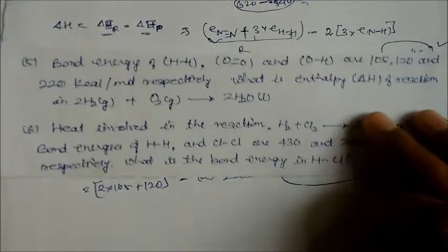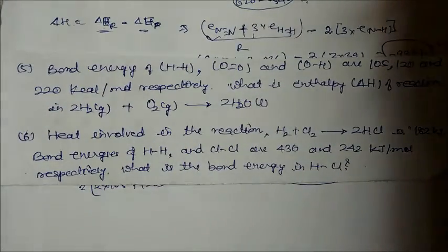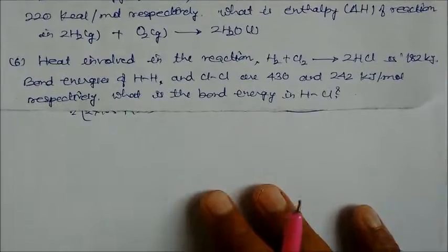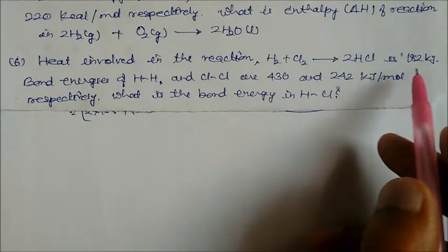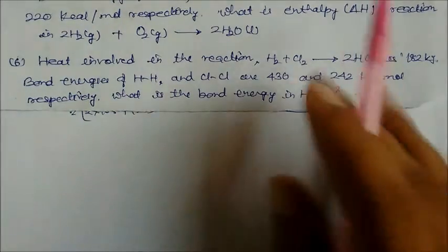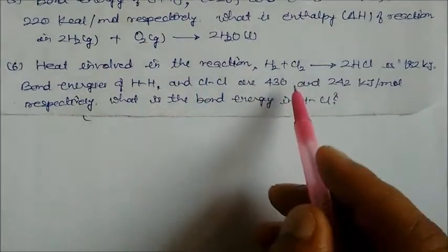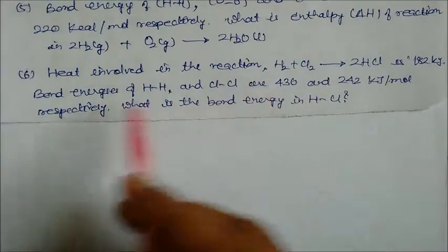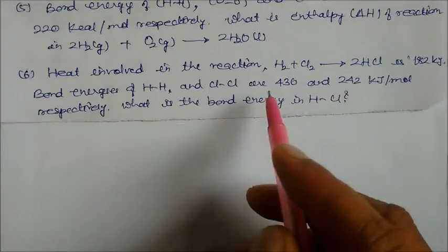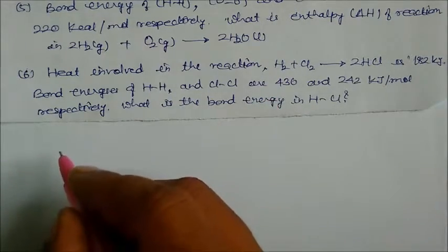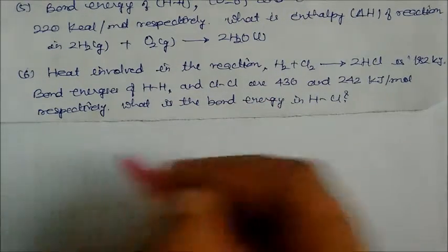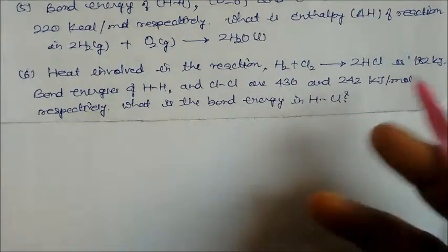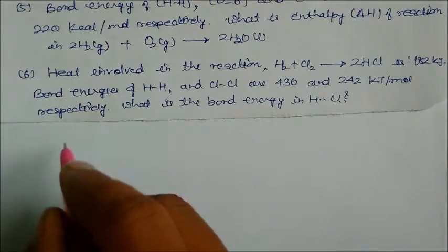Question 6: heat involved in the reaction H₂ + Cl₂ → 2HCl is −182 kilojoule. Bond energy of H-H is 432 and Cl-Cl is 242 kilojoule respectively. What is the bond energy of HCl? We apply delta H = energy of reactants minus energy of products.